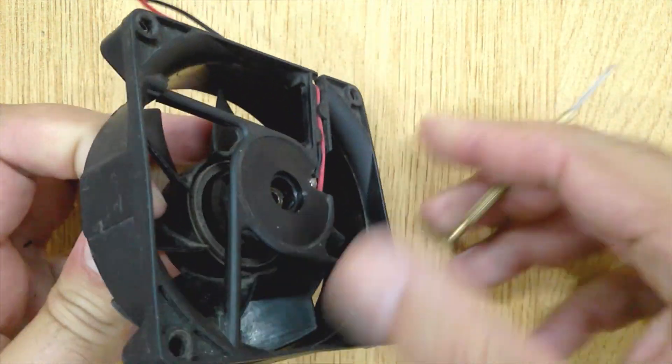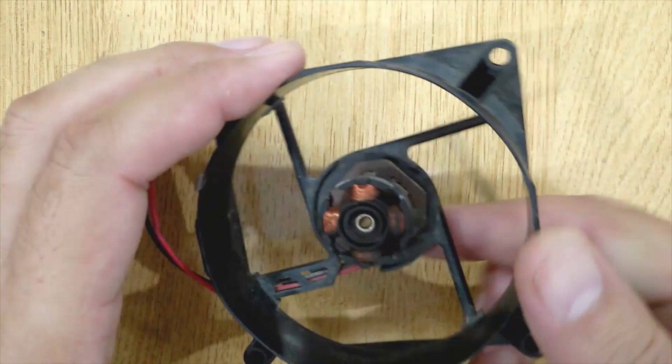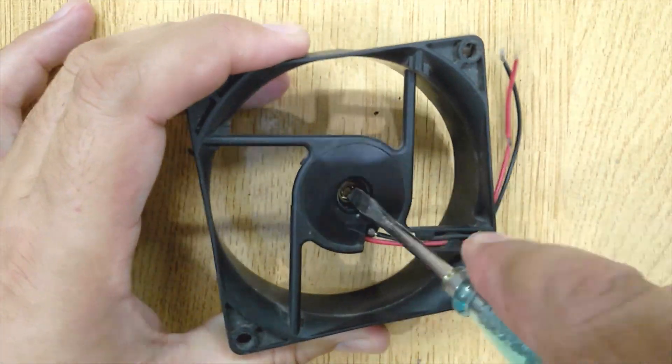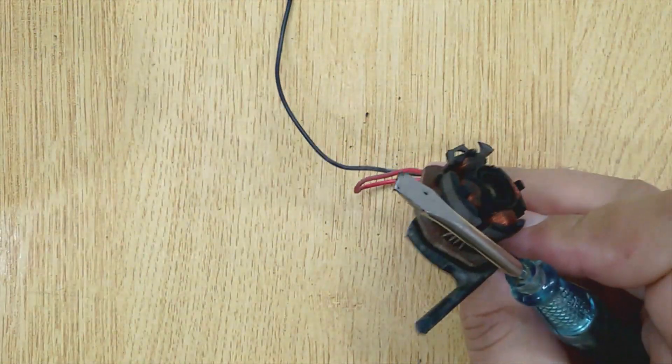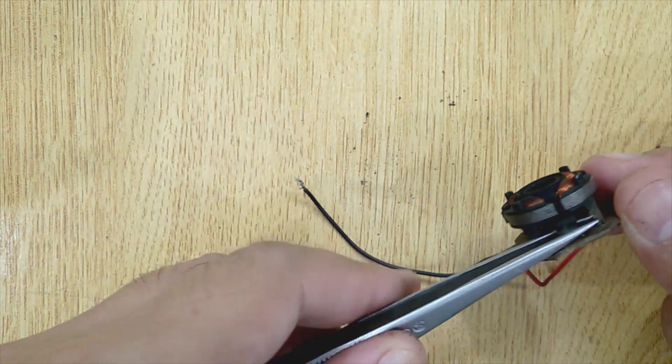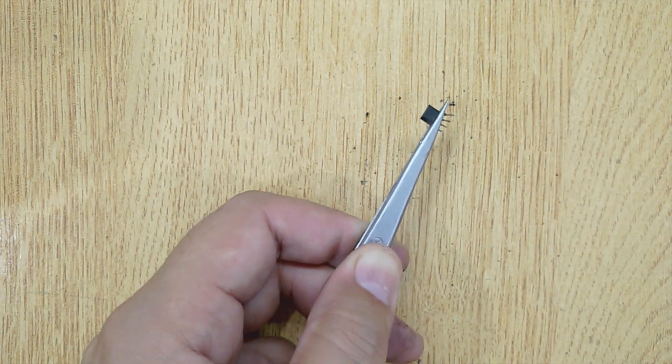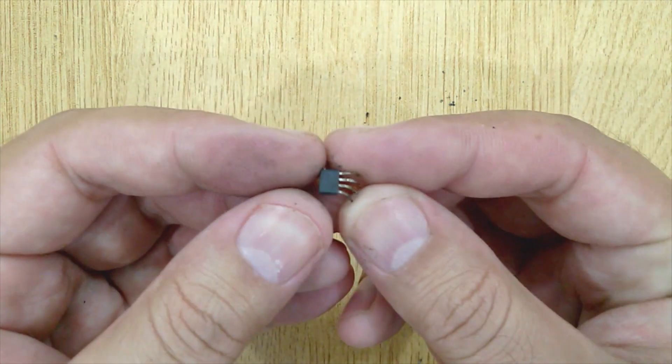Open DC motor of an old CPU fan. You will find a hall effect sensor inside it. I will unsolder the hall effect sensor using solder iron. Now we are ready to use it in our electronic projects.